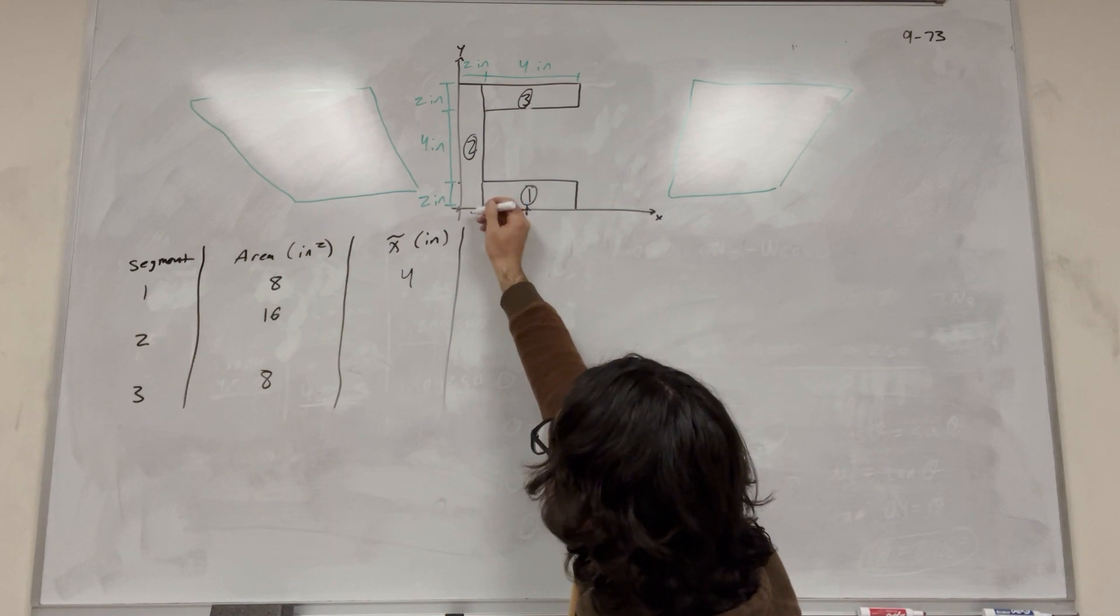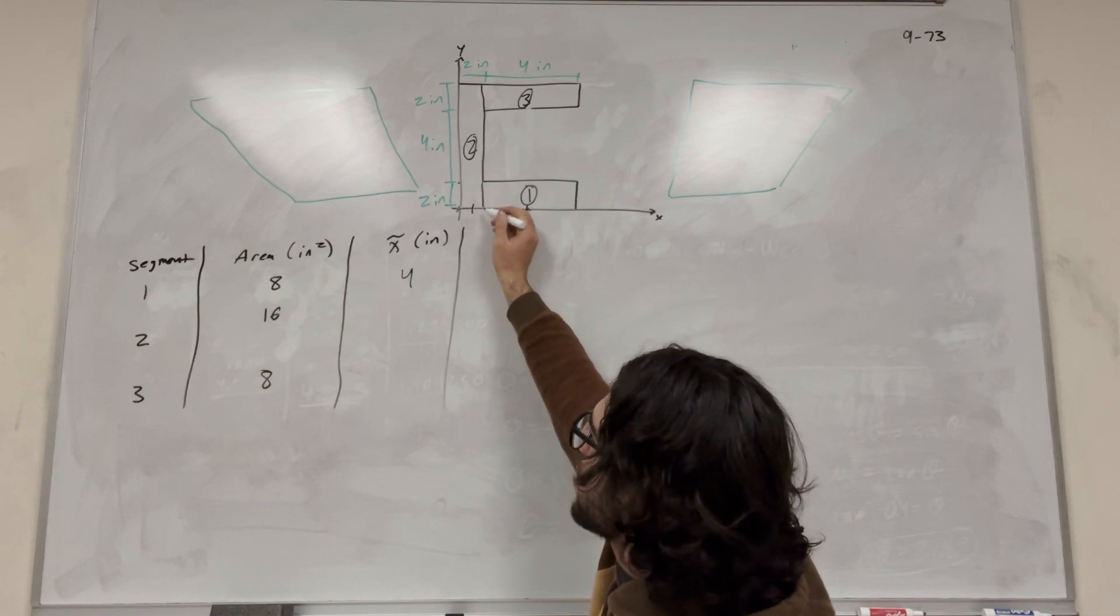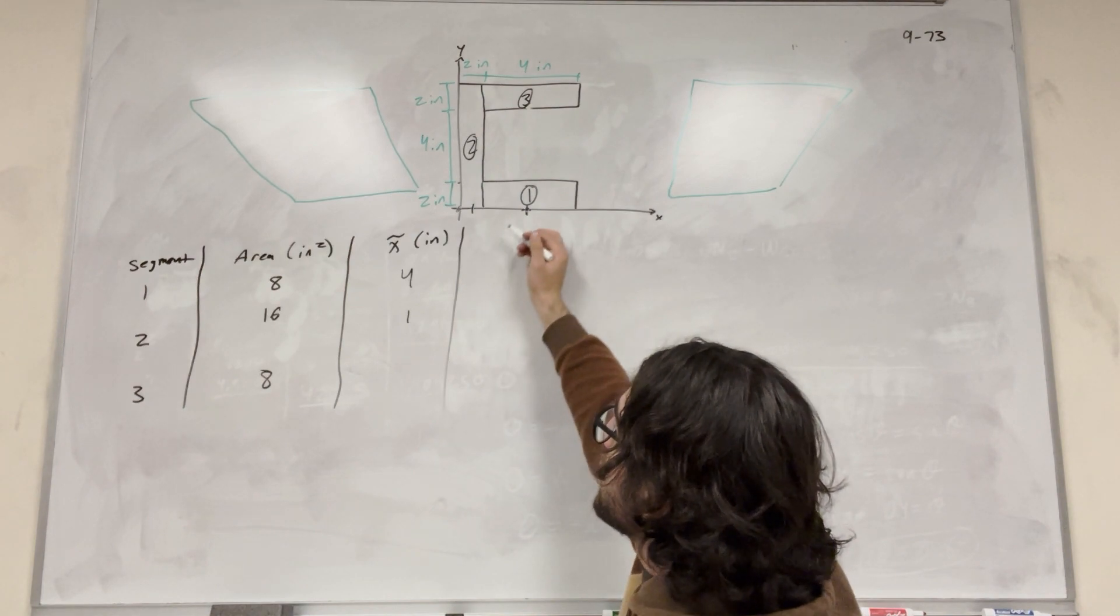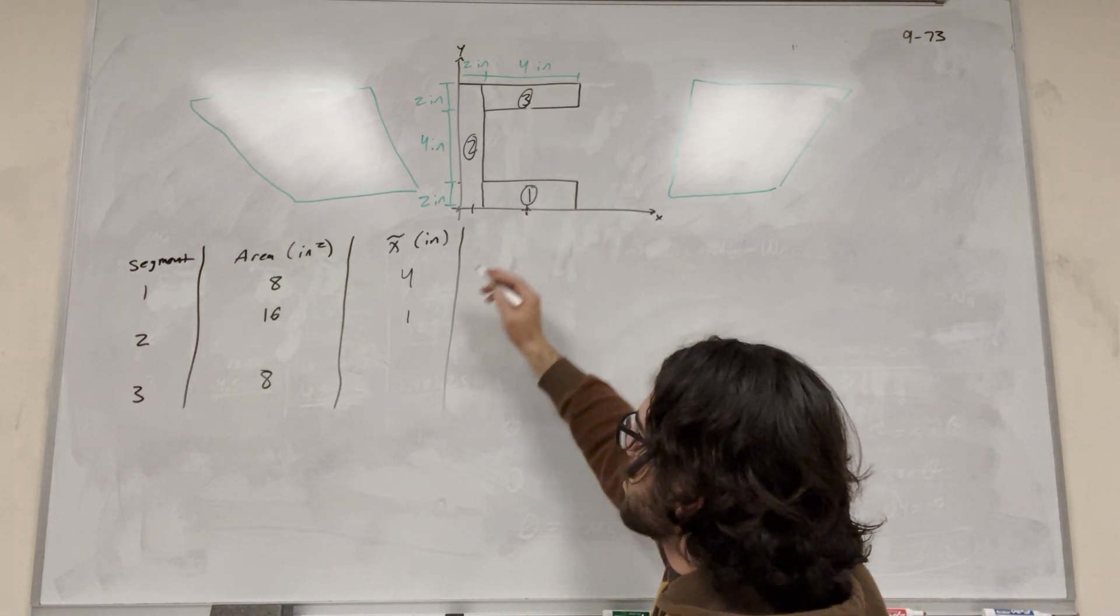So then for two, its center of mass is going to be here, which is just going to be one inch over, right? Because the whole block is two inches. That's going to be one inch. And then block three is going to be the same as block one, so four.